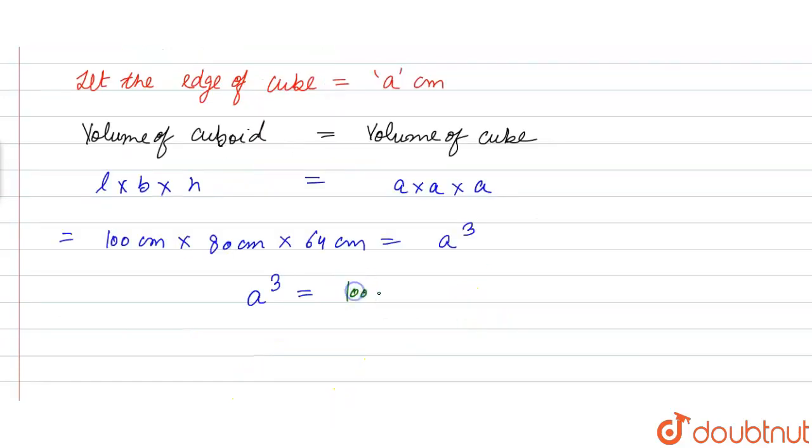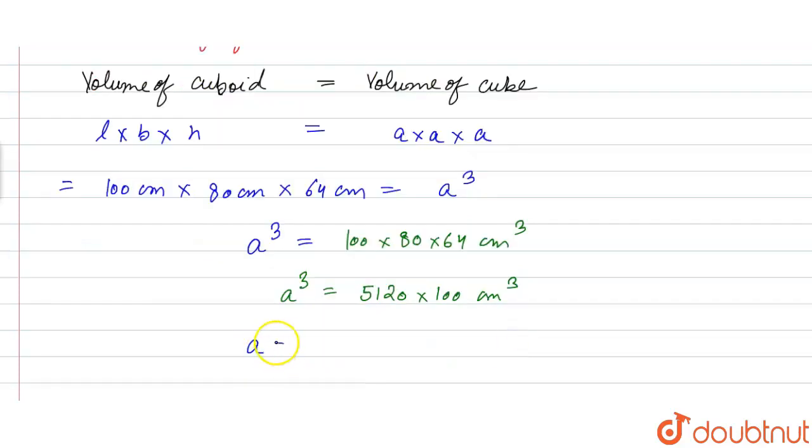So 80 into 64 is 5120 and into 100 we have a cube is equal to 5120 into 100 centimeter cube.